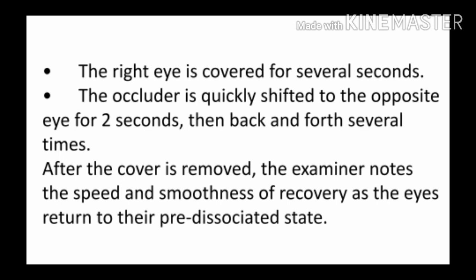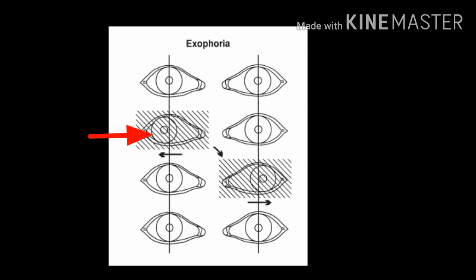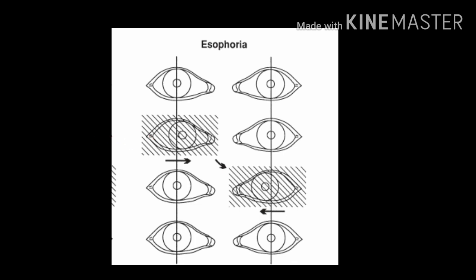If the eyes deviate upward on uncovering, it is hyperphoria; if downward, it is hypophoria. As shown in the diagram: when the right eye was covered it deviated temporally under cover; when the occluder was shifted to the left eye after two to three seconds, the right eye moved nasally back to its original location to take fixation. On uncovering the right eye we see it moved nasally — therefore this is exophoria. Conversely, if the right eye deviated nasally under cover and then moved temporally on uncovering, this is esophoria.